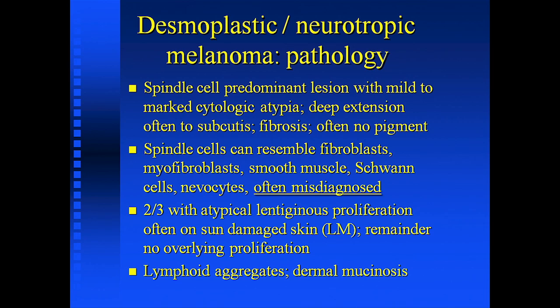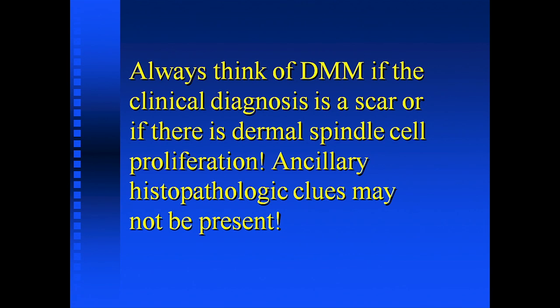The lymphoid aggregates, if you see them, are very characteristic — you should look for that in those cases without the atypical hyperplasia. Always think of desmoplastic melanoma if the diagnosis is a scar. Ancillary histopathologic clues may not always be present; you may not always see the atypical hyperplasia and you may not see the lymphoid aggregates. You must always think of this.